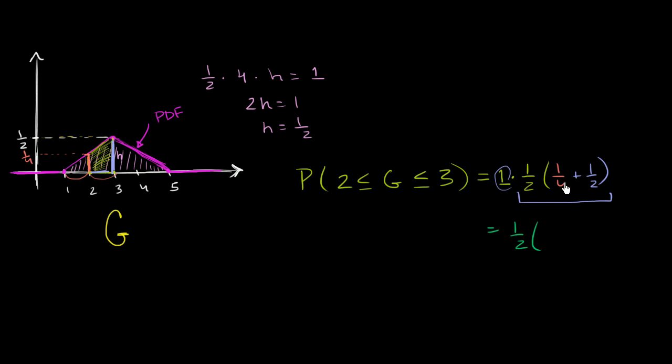Well, that's 1/4 plus 2/4, which is 3/4, which is equal to 3 over 8. So the probability that g, for this non-uniform distribution, that g is between 2 and 3 is equal to 3/8.